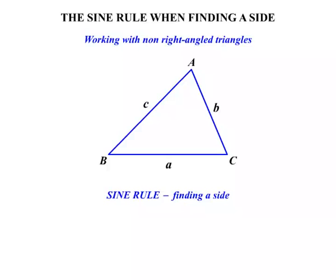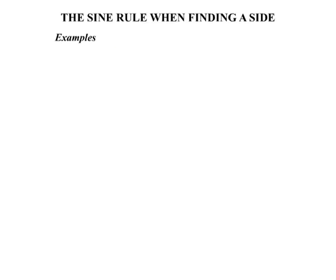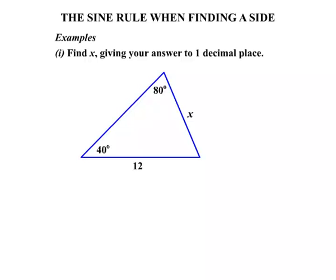Now the sine rule when finding a side states that a over sine A equals b over sine B, which equals c over sine C. But for the purposes of solving these equations, we'll just drop off that last part and concentrate on this first pair. So a over sine A equals b over sine B. Let's look at a few examples.